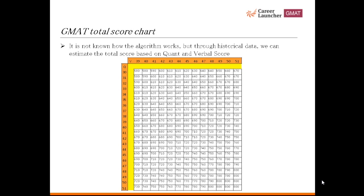This chart compares various sectional score combinations to arrive at an approximate total score. If you get 46 in verbal and 44 in quant, you will approximately get a total score of 730.